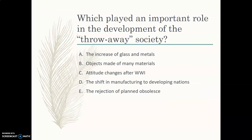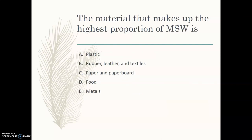Which played an important role in the development of the throwaway society? Is it the increase in glass or metals, objects made of many materials, attitude changes after World War I, the shift in manufacturing to developing nations, or a rejection of planned obsolescence? If you chose objects made of many materials, you were correct. When you have something with a bunch of different materials — think about an iPhone with plastic, glass, and metal — it's hard to break apart and take apart, and because of that it is hard to recycle and easier to just dispose of. The material making up the highest proportion of municipal solid waste is paper and paperboard.